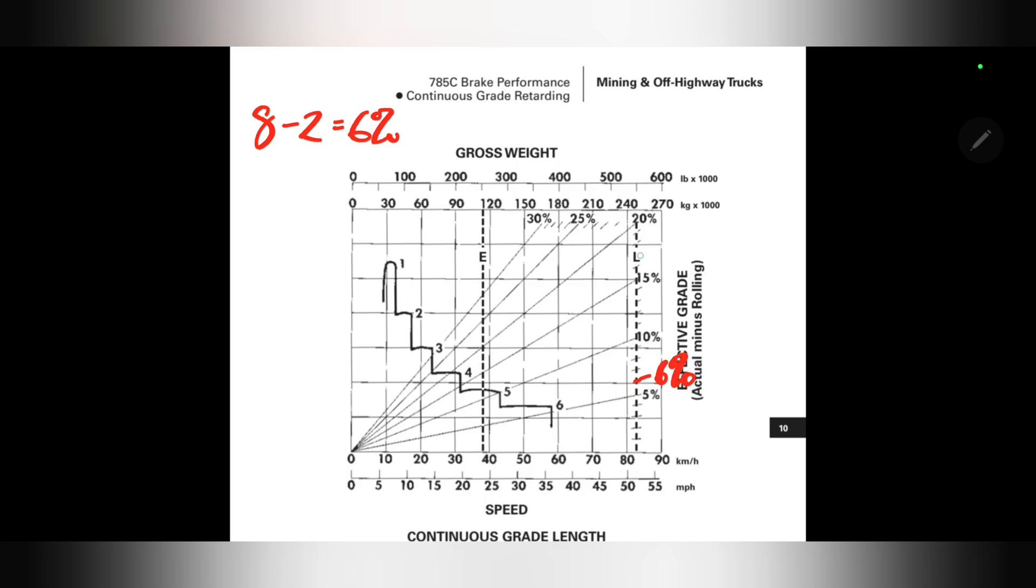And again, we are loaded. So we draw the line down to the 6% mark. Go across until we hit the retard curve. That gives us 4th gear.